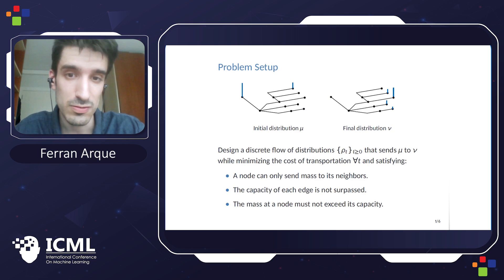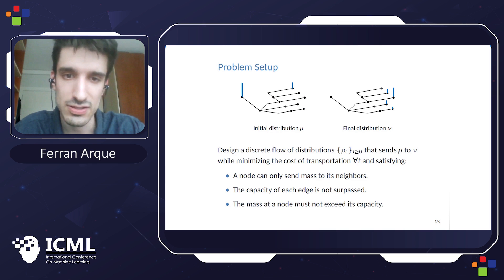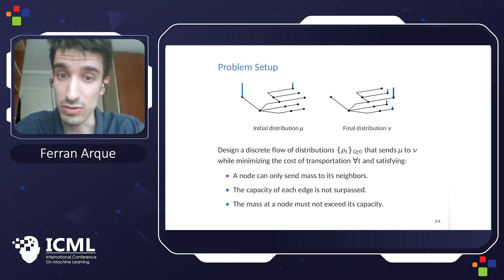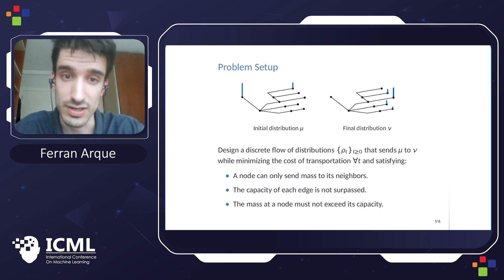The problem is set up as follows: we have some mass initially distributed according to a probability measure over the nodes of a graph, and we want to find the discrete flow that sends the mass to a final distribution, while minimizing the cost, and also taking into account the network topology, so a node can only send mass to its neighbors, and we also have capacity constraints in both the edges and the nodes.